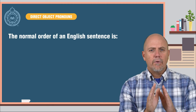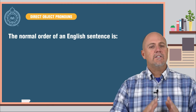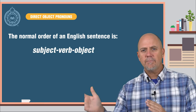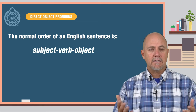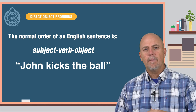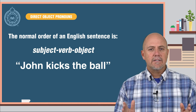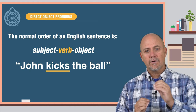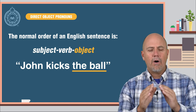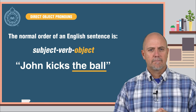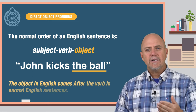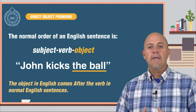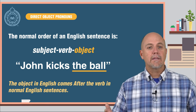The normal order of an English sentence is subject, verb, object — like this: John kicks the ball. In this sentence, John is the subject, kicks is the verb, and the ball is the direct object. The object in English comes after the verb in normal English sentences.